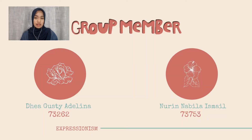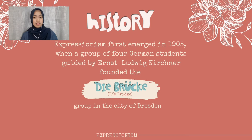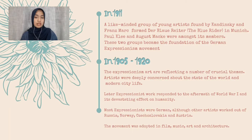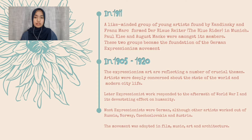First of all, this movement first emerged in 1905 when a group of four German students gathered by Ernst Ludwig Kirchner founded the Die Brücke group in the city of Dresden. Then in 1911, the group of young artists founded by Kandinsky and Franz Marc formed the Blue Rider in Munich, which Macke and August Macke were also members. These two groups became the foundation of the German Expressionism movement.